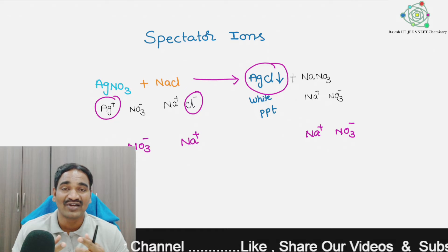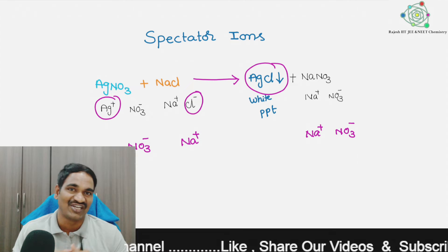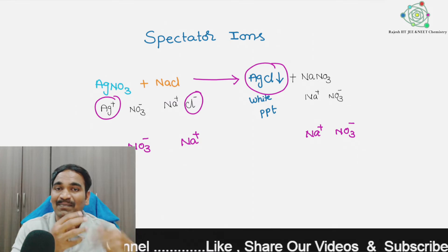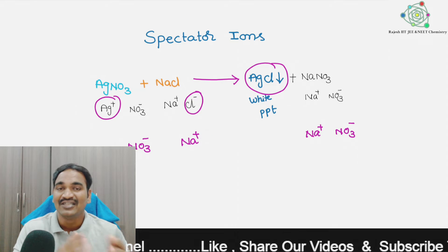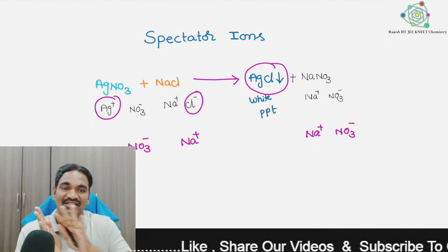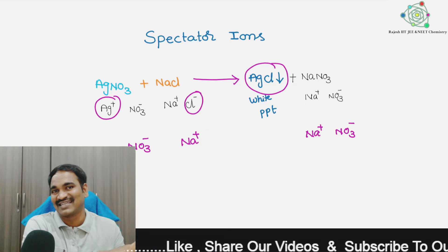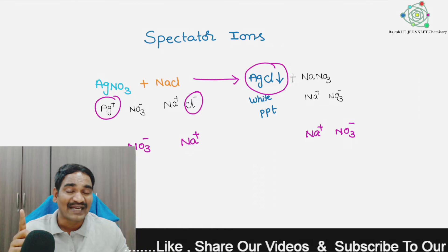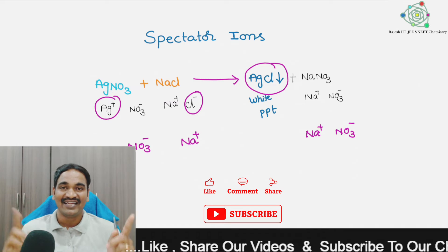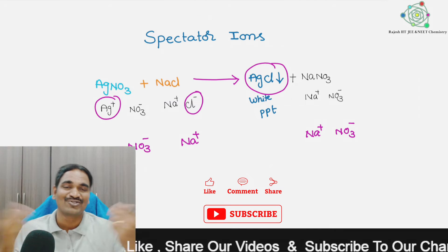Finally, we can say that the spectator ions are Na+ and NO3-. These are the ions which are not participating in the precipitation reaction. They just move from reactants to products. These spectator ions are present on both sides — in the reactant side and the product side.